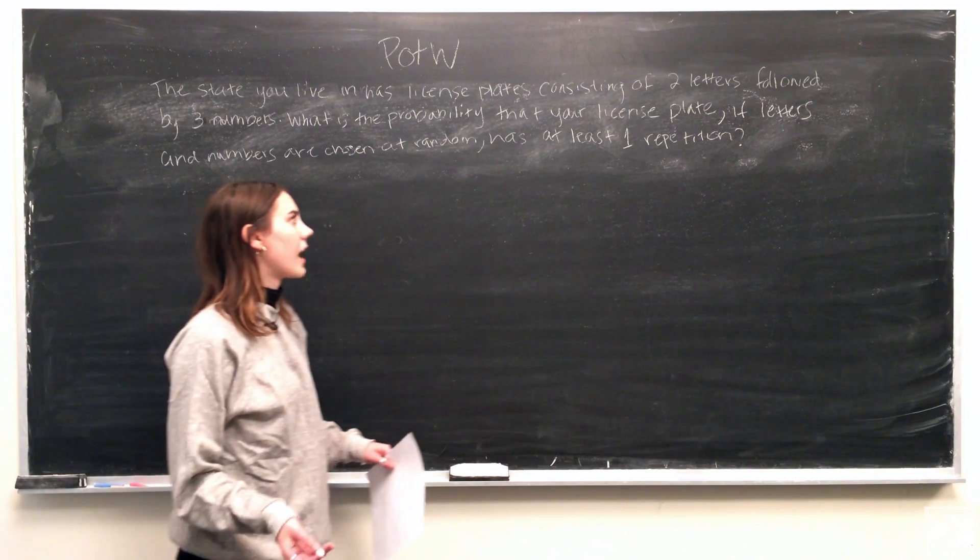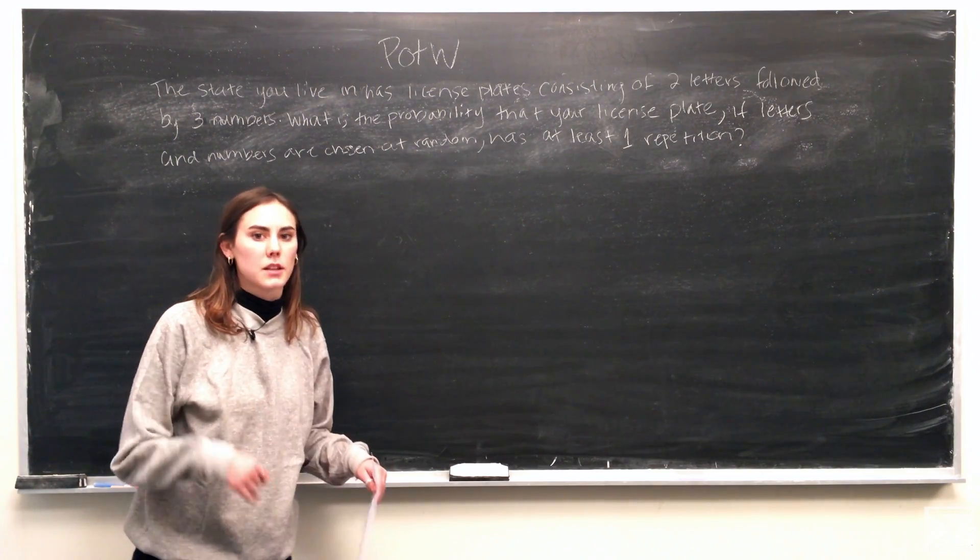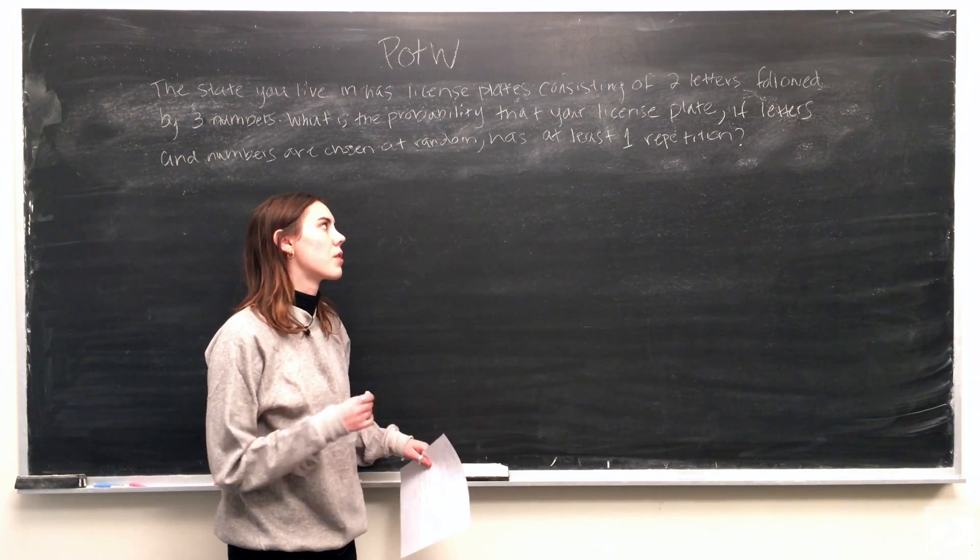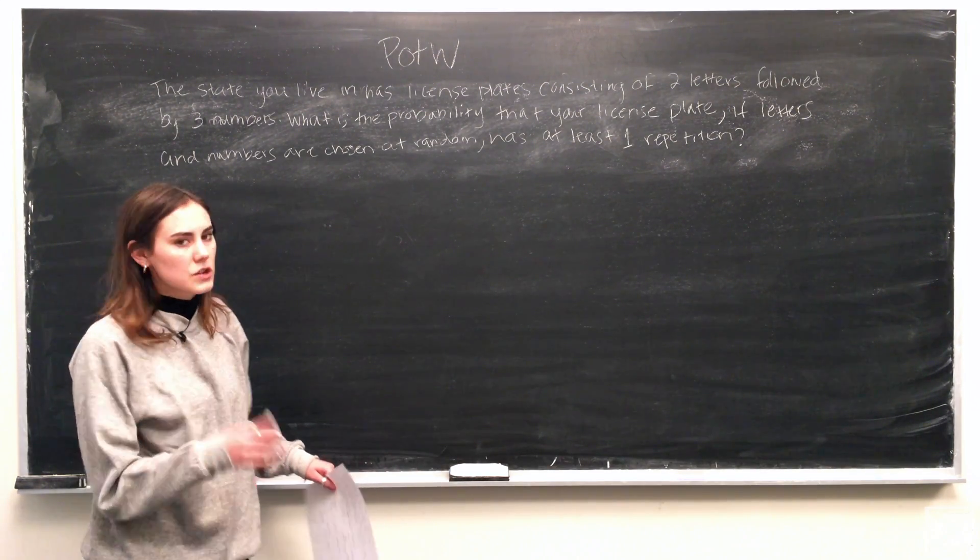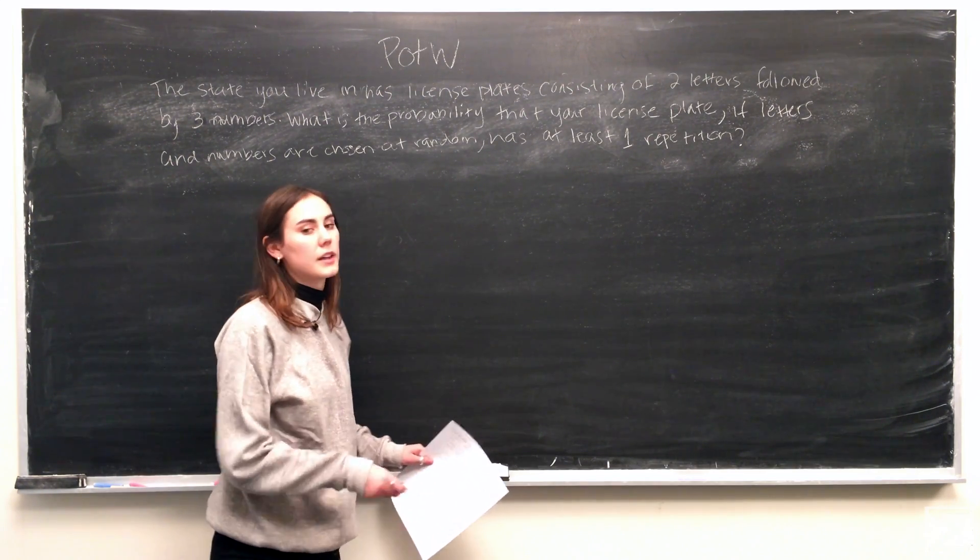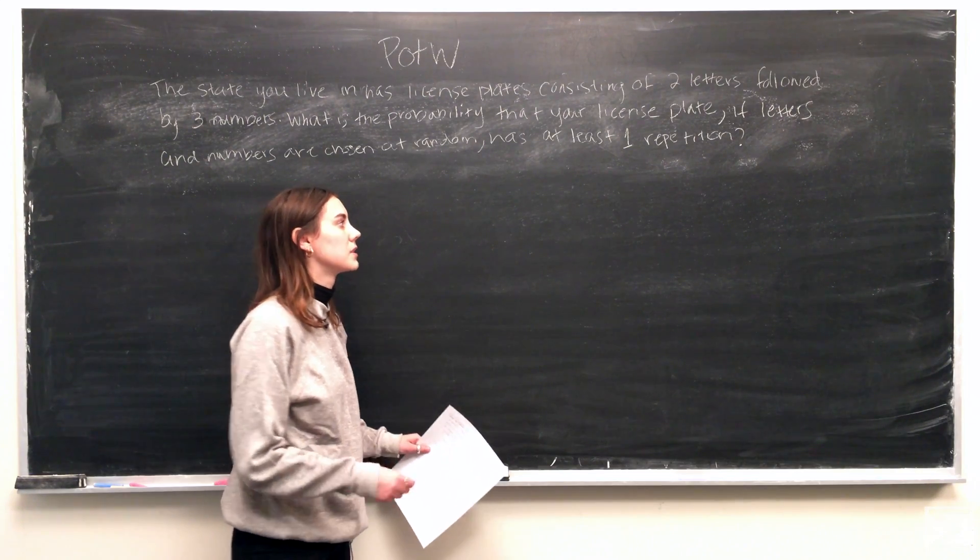So this problem asks for the probability that the license plate has at least one repetition. That means we're looking for the probability of it having one, two, three, and so on. So what we can do instead of trying to find the probabilities of all of those and adding them together...